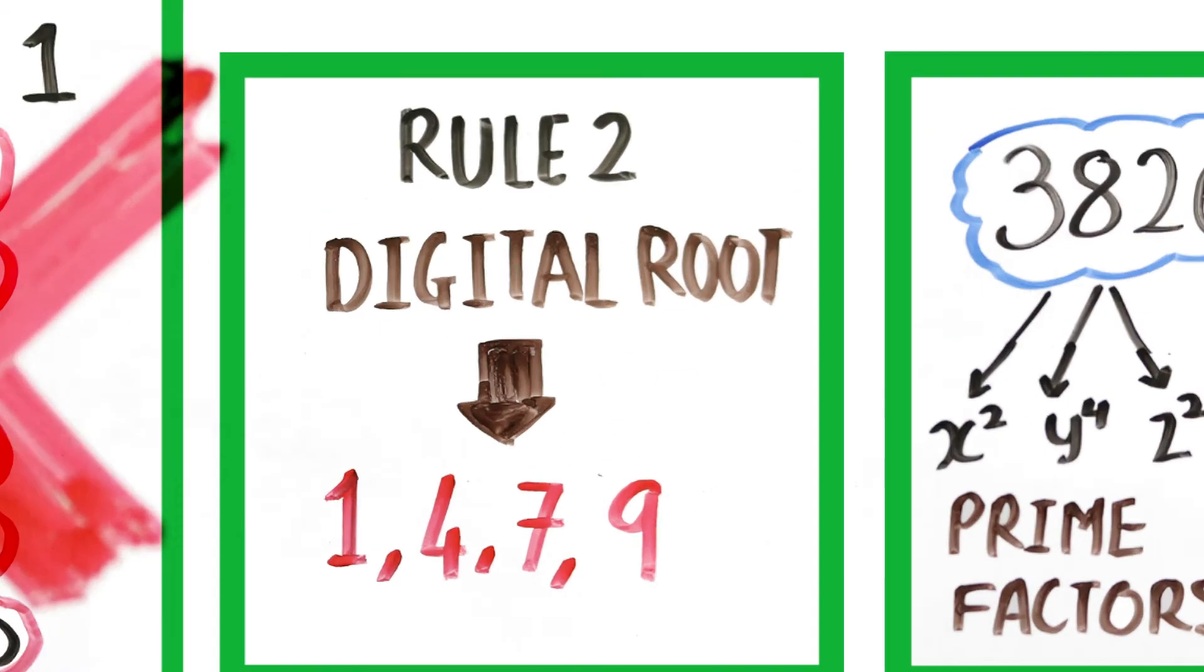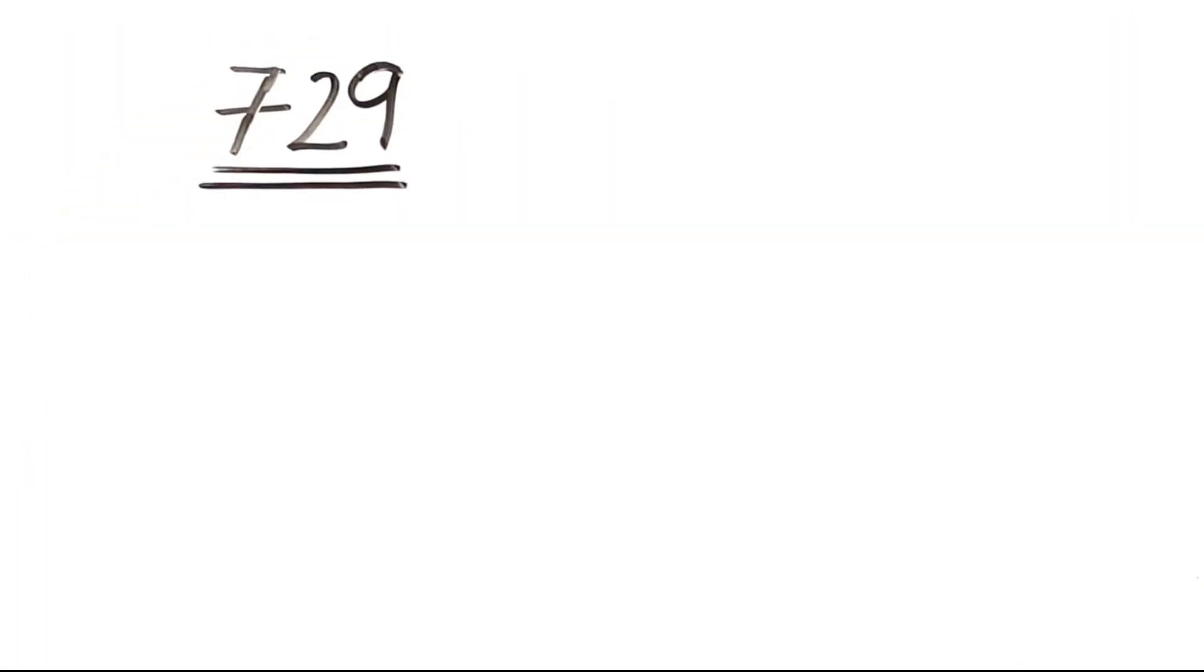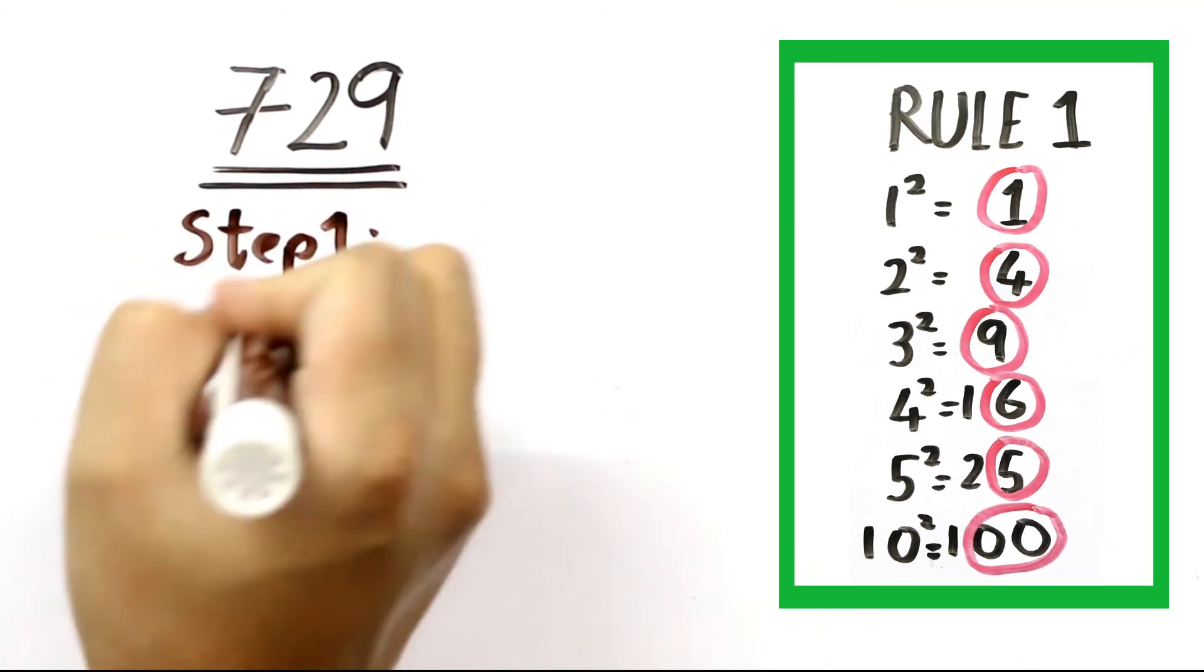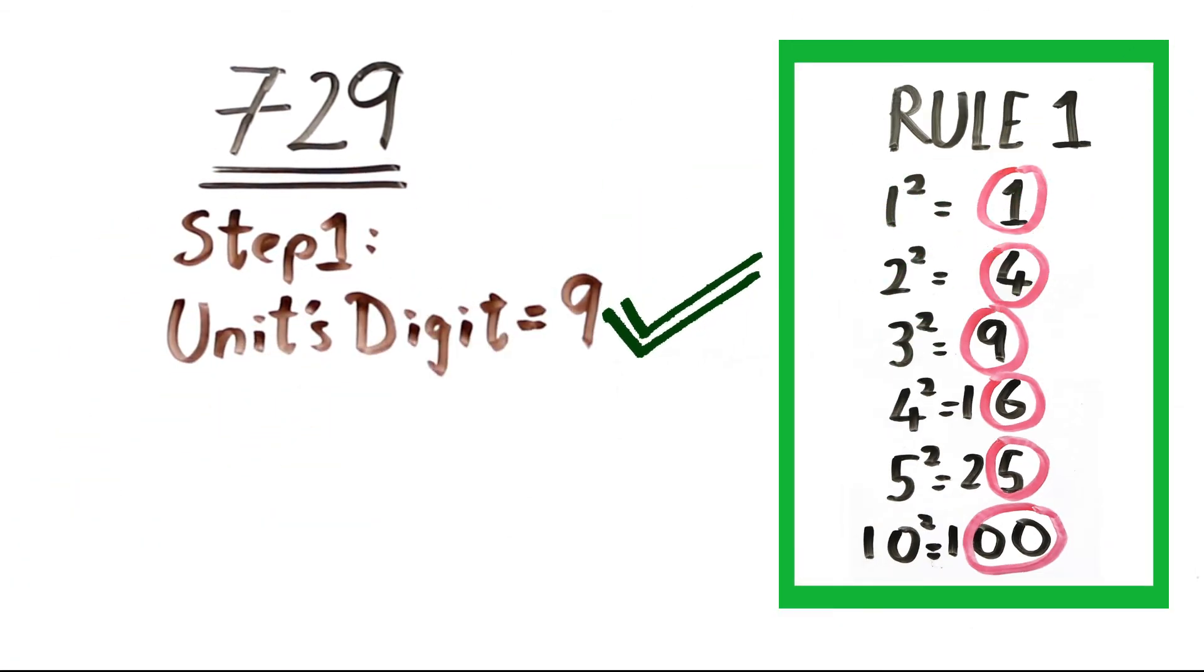Let's take an example of a perfect square. So let's take 729. Step 1 is to check for the last digit. Here it's 9, so it doesn't violate our rule. So let's move on to the next step.